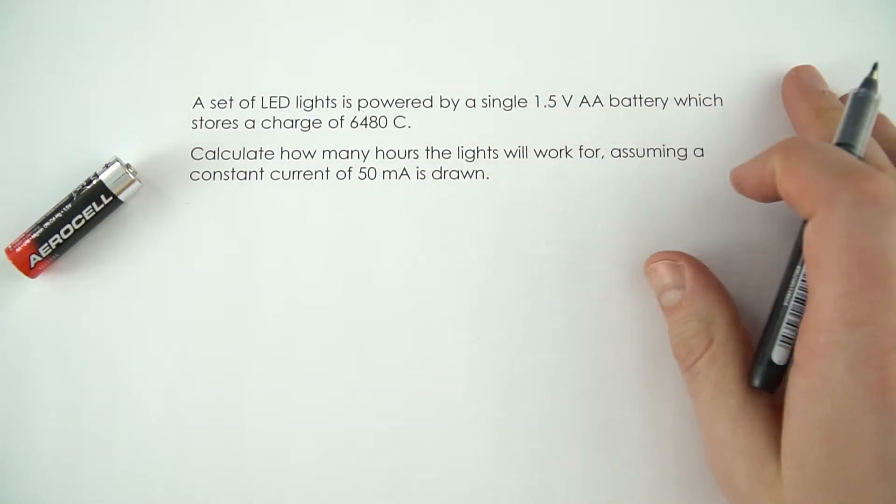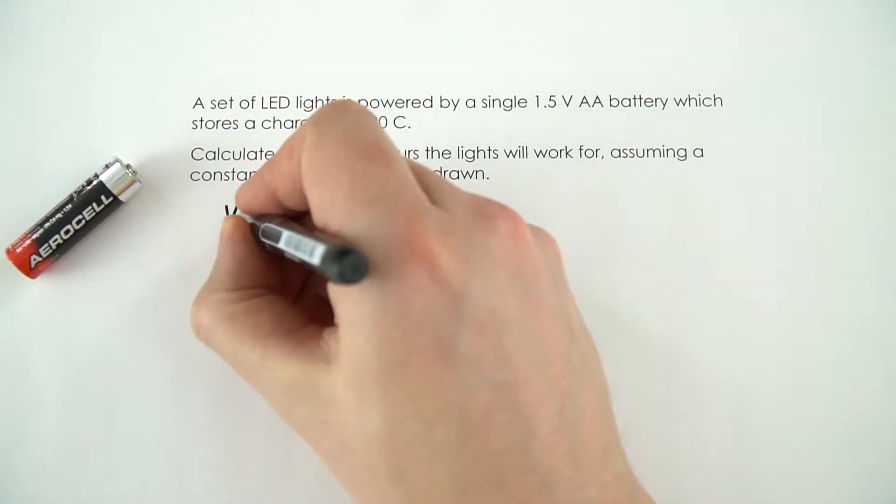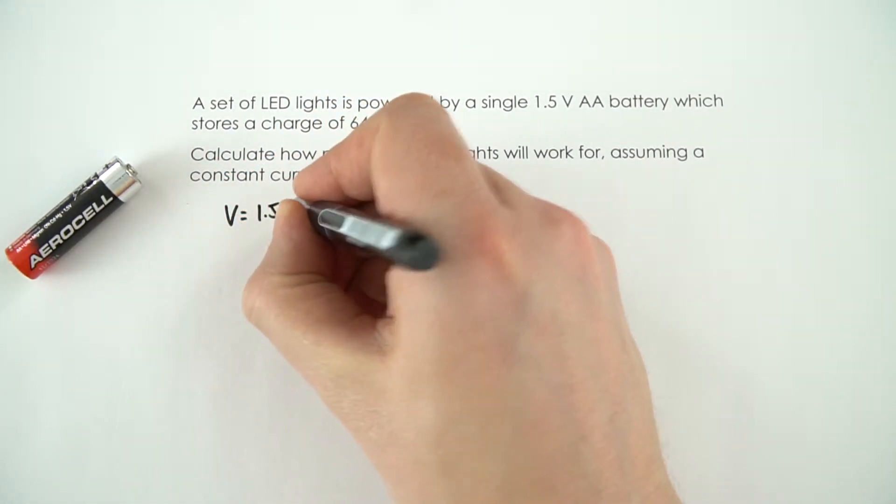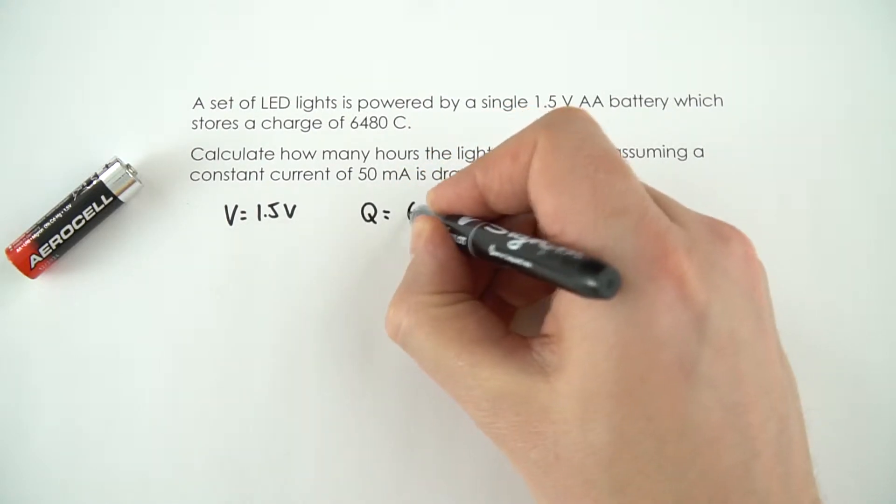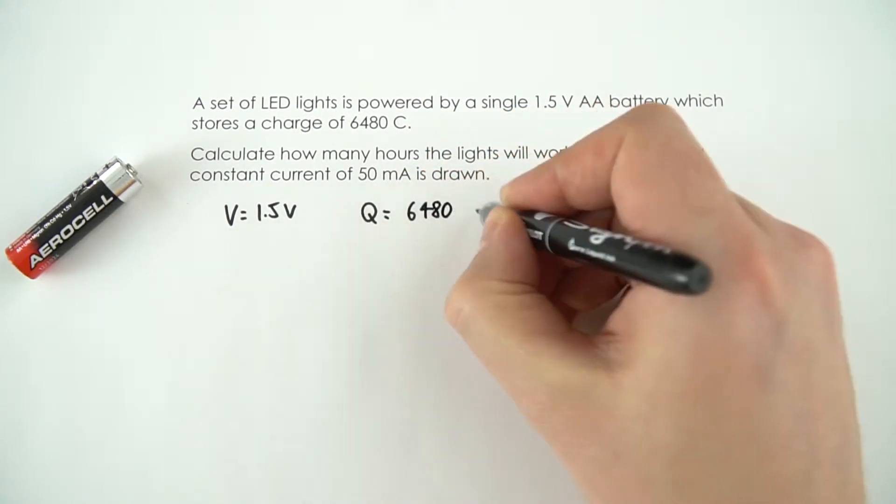So I'm just going to start to write down what I know. I know that the potential difference is equal to 1.5V. I know that the charge stored Q is equal to 6480 coulombs.